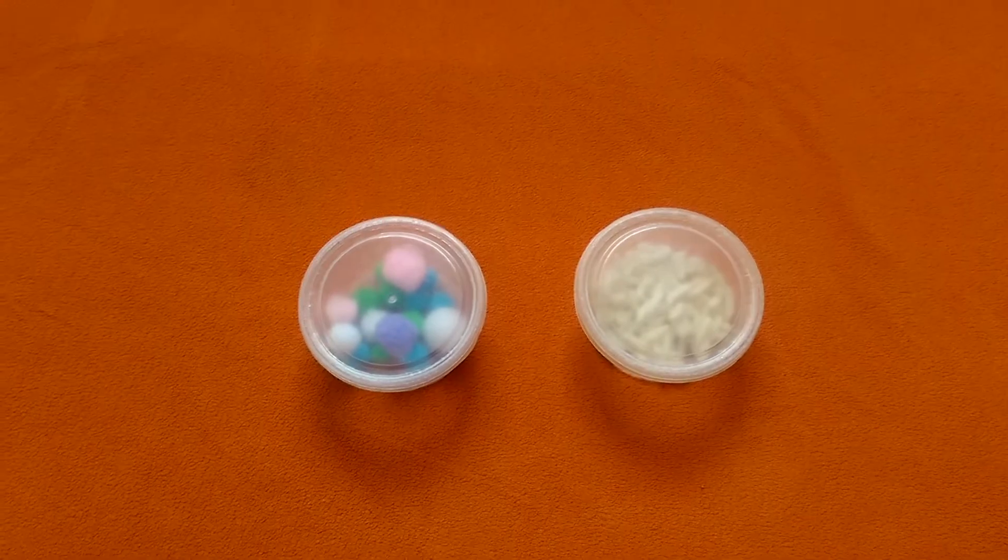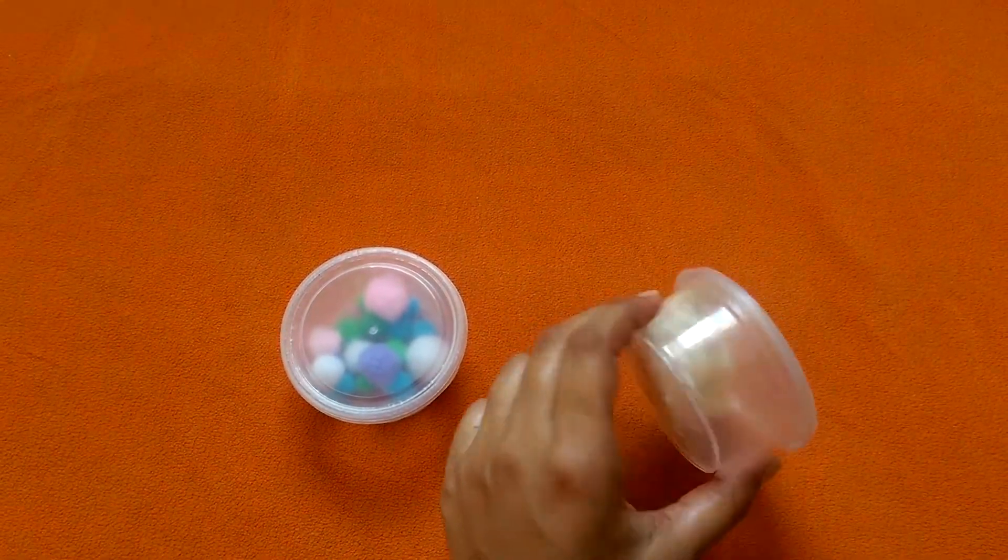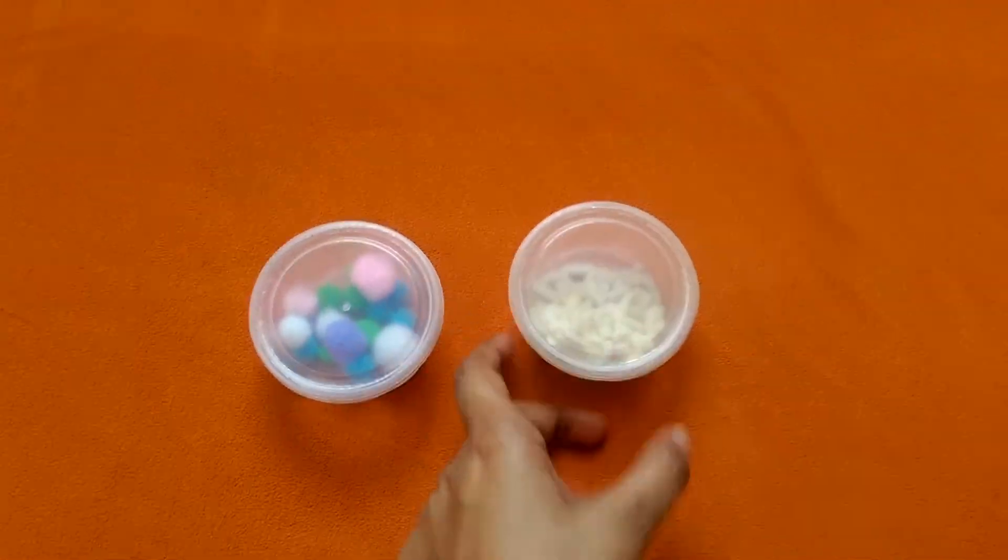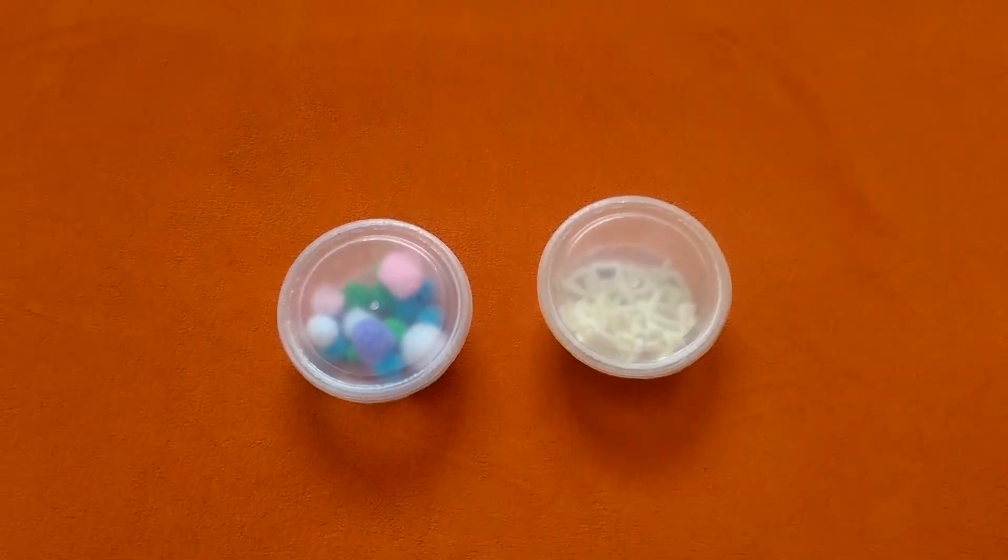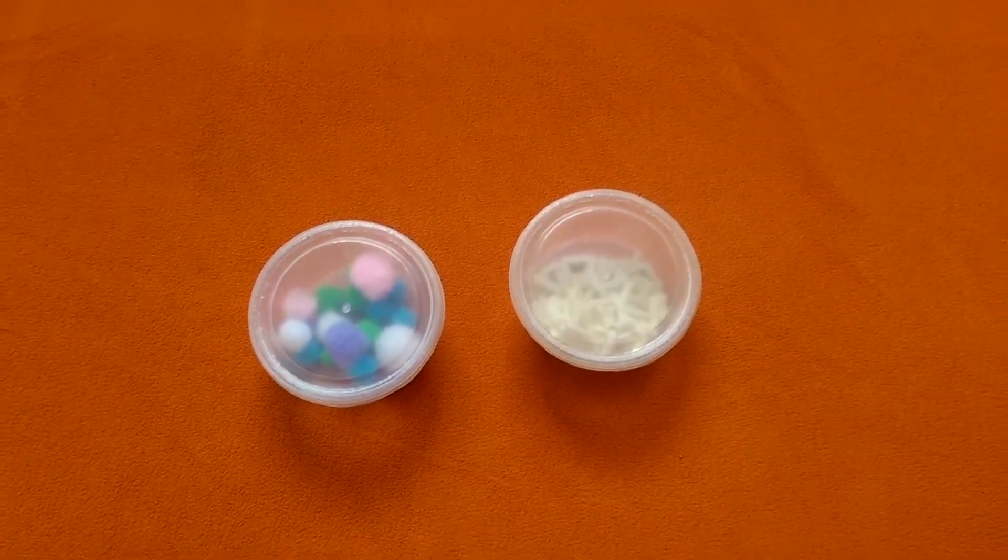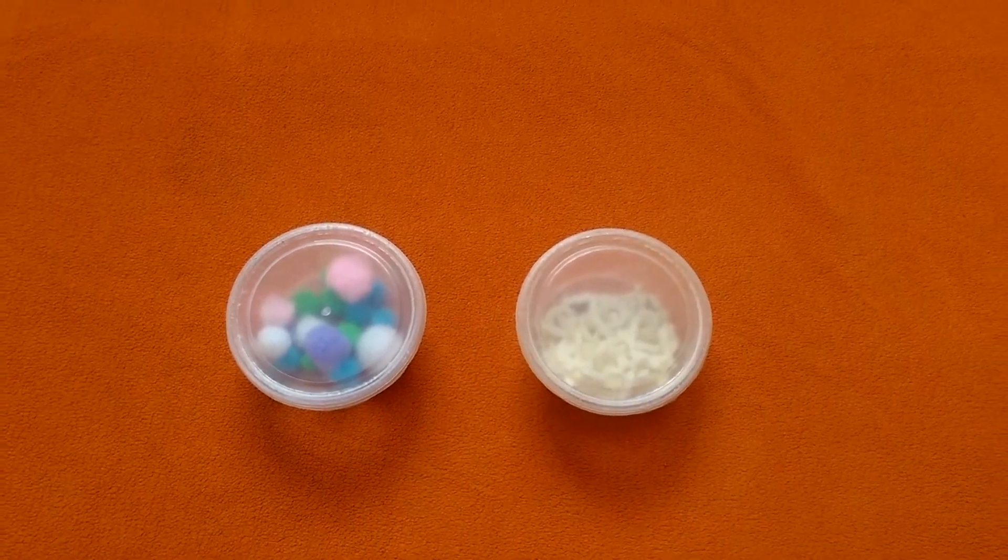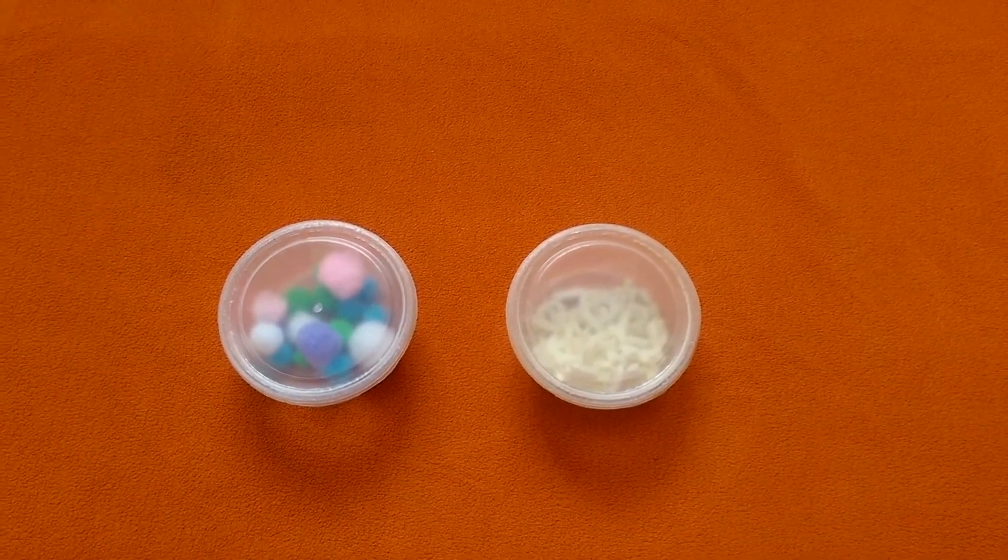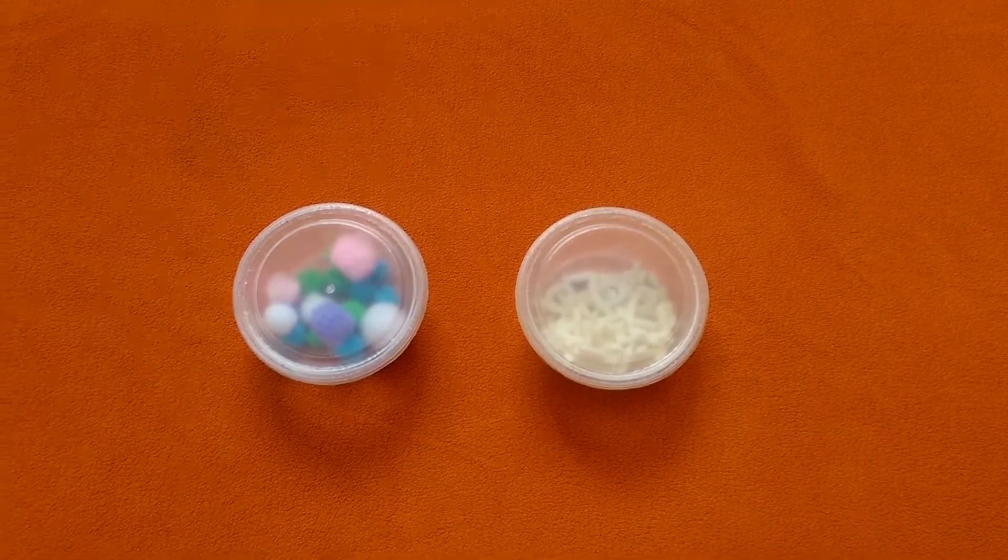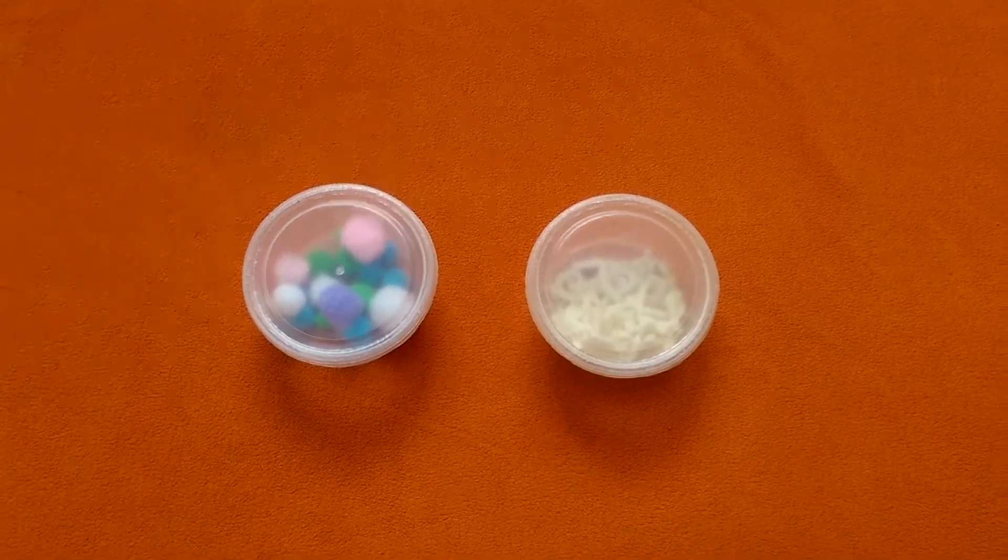In the second box that I have here, I've added some puff rice. You can put anything, but I personally prefer puff rice because even if my baby accidentally opens it, spills it over, and eats some of it, it's absolutely fine with me.